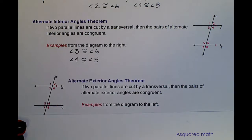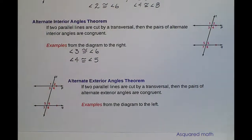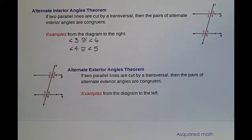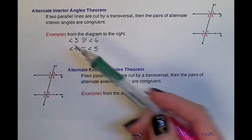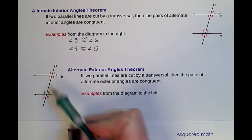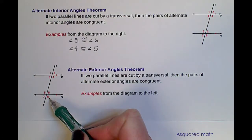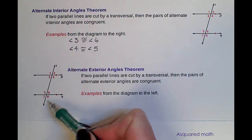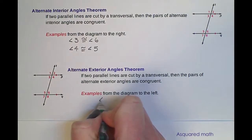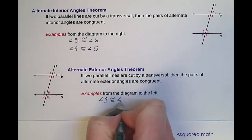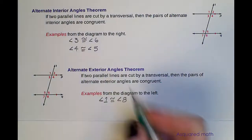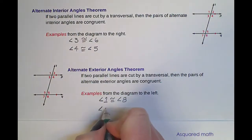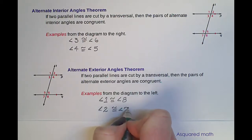The next set of angles are the alternate exterior angles. We're again looking on opposite sides of the transversal. Exterior means we're looking on the outside of the parallel lines instead of the inside like we were for the interior angles. So if we look at angle 1 and angle 8, they're on opposite sides of the transversal and on the outside of the parallel lines — so angle 1 is congruent to angle 8. And angle 2 is congruent to angle 7 because they are also alternate exterior angles.